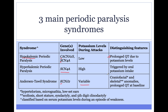The distinguishing features of Andersen-Tawil syndrome include craniofacial and skeletal anomalies. Those include hypertelorism, a small jaw, and low-set ears, as well as scoliosis, short stature, syndactyly, and fifth-digit clinodactyly.